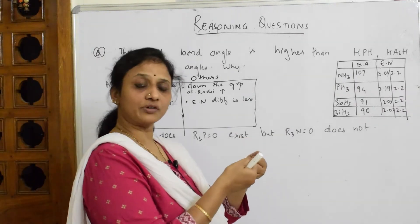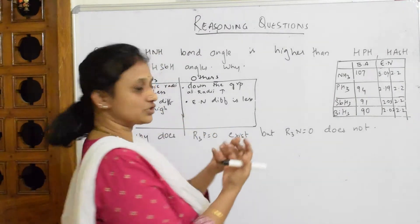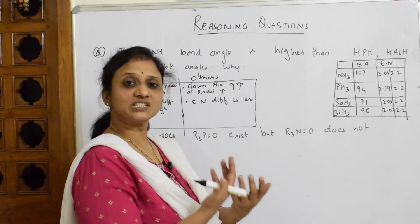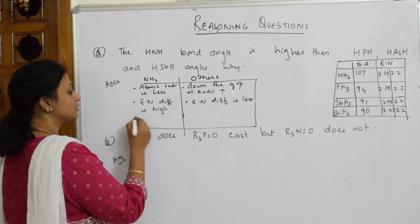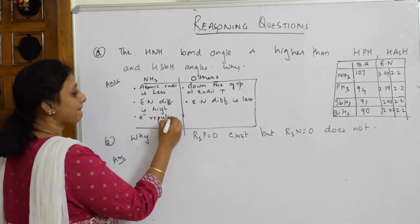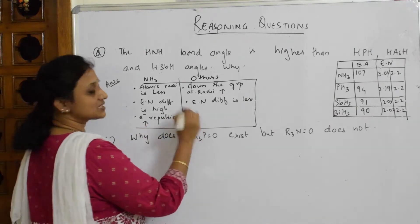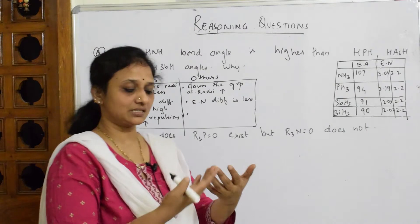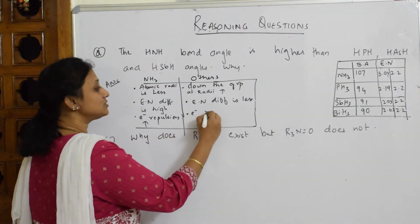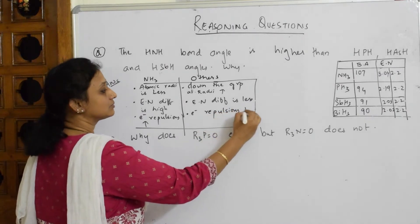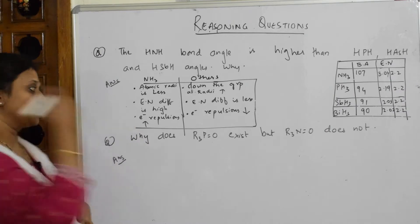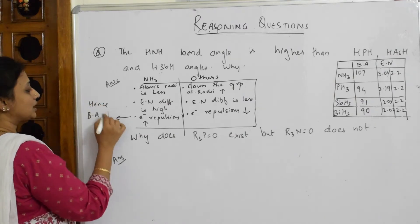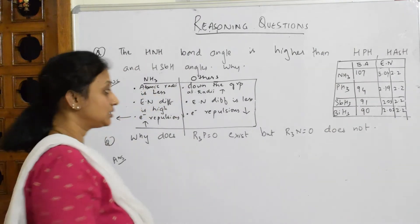When the electronegativity difference is very high, there is an amount of repulsion created. The lone pair on nitrogen and the electrons on hydrogen both repel each other — there are electron repulsions between adjacent atoms. So electron repulsions increase in ammonia. For phosphorus, the size is bigger, so the possibility of electron repulsions between phosphorus and hydrogen is very less — electron repulsions decrease.